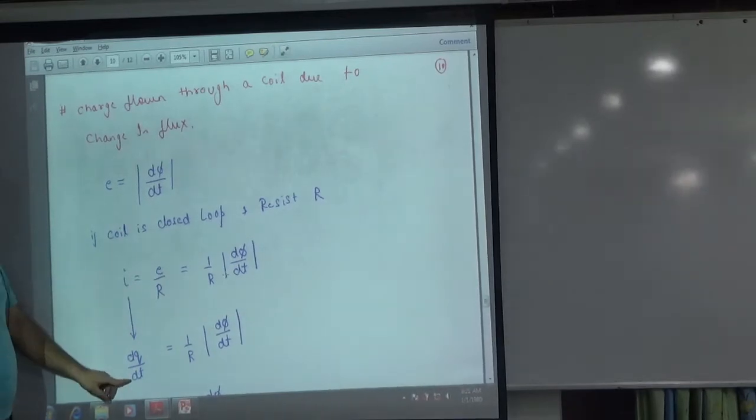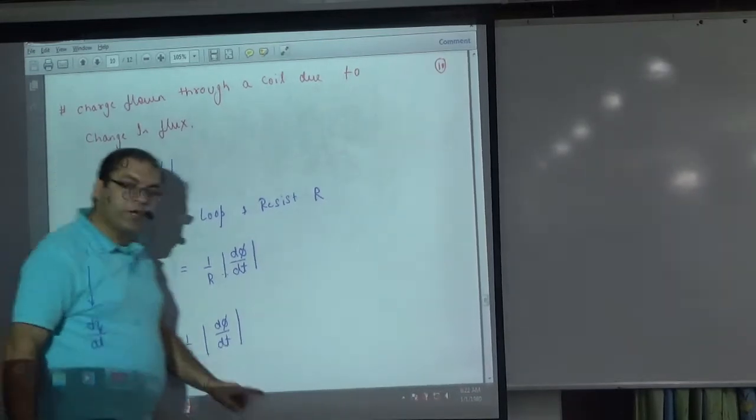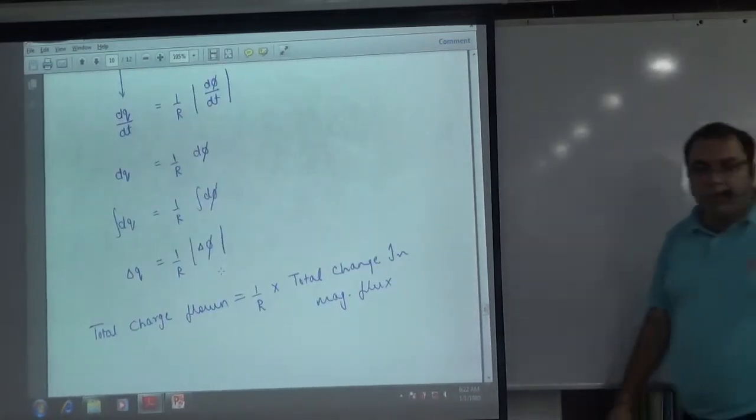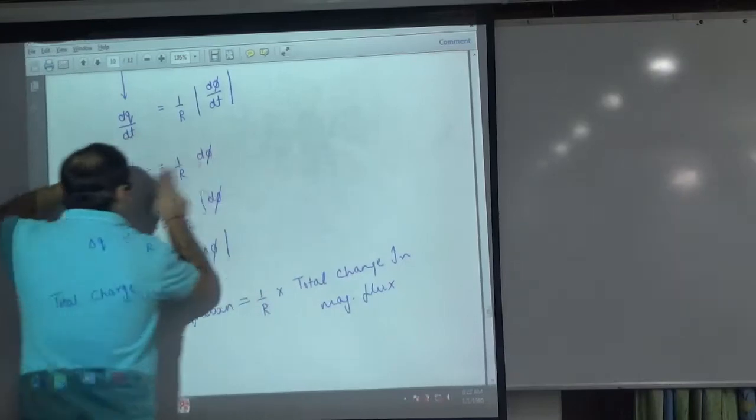What is current? dQ by dt. The dt cancels. So what is small dQ value? Small charge, when small flux dΦ change will be equal.